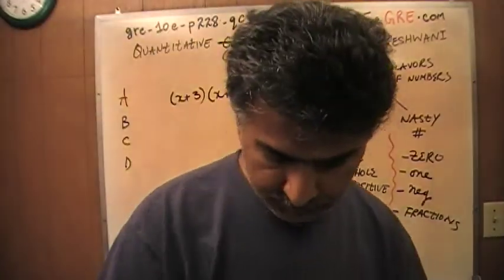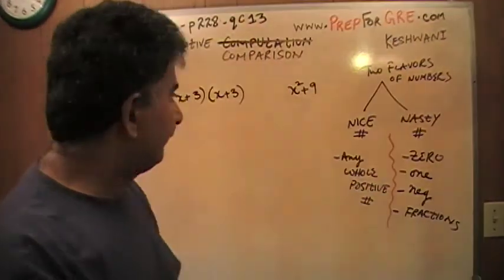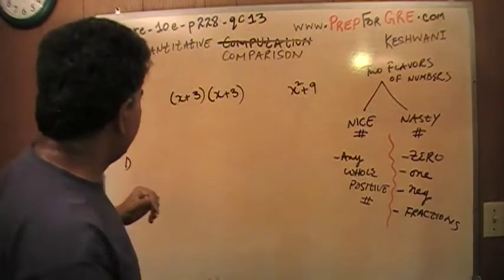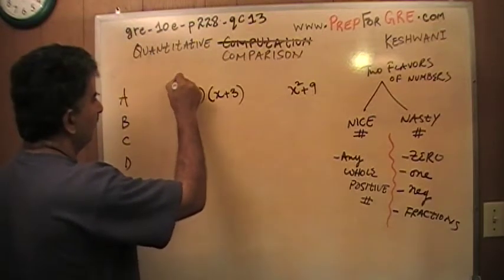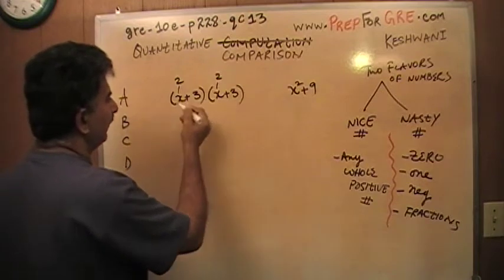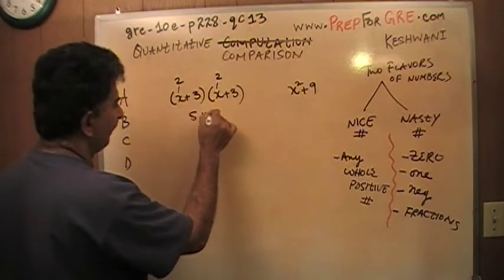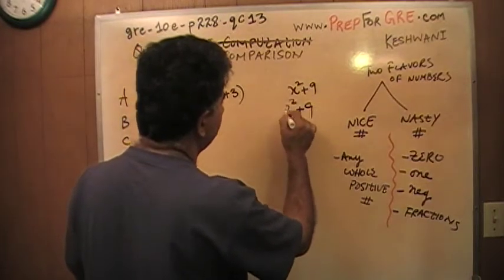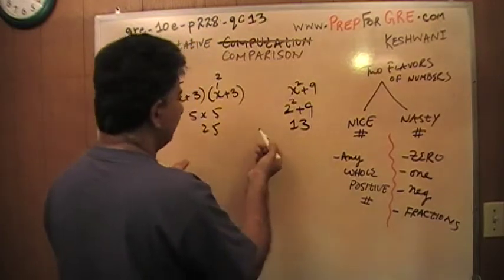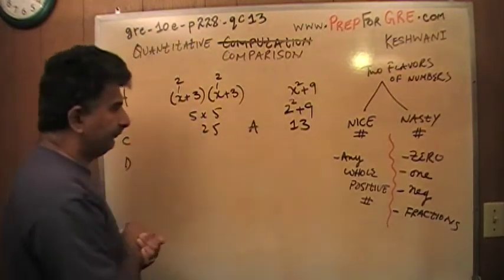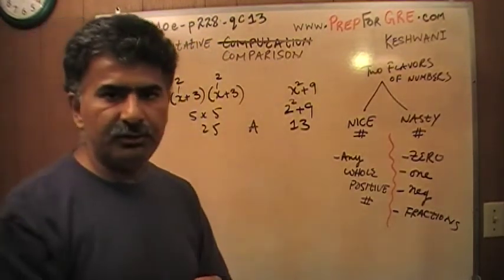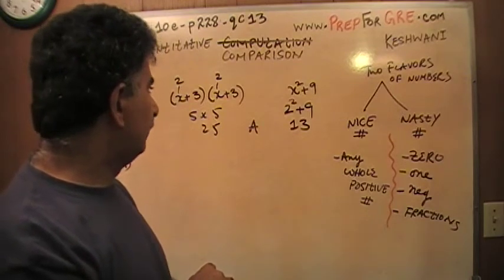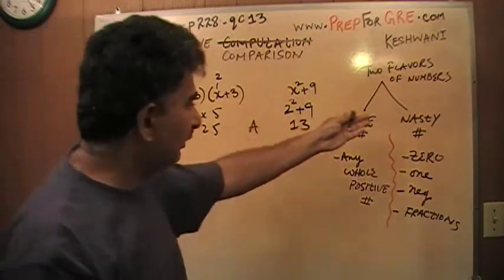For example, if I plug in a nice whole number — say x equals 2 — then 2 plus 3 is 5, and 5 times 5 is 25. On the other side, 2 squared plus 9 gives me 13. It seems like the answer is A, and you might think you're done. But what if x happens to be one of those nasty scenarios?